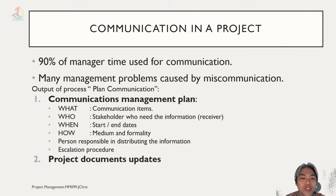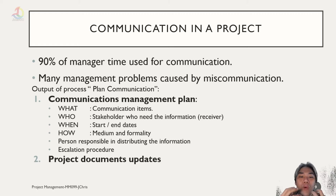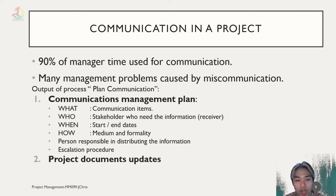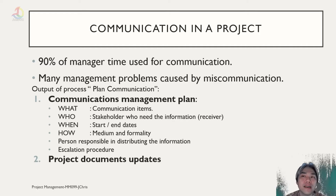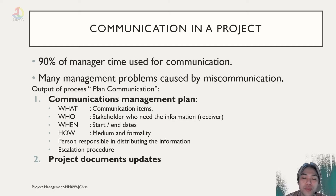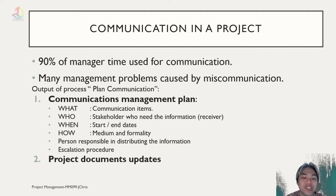In the communication management plan we have to know: what, who, when, and how. 'What' is the communicated items — the things that need to be communicated. 'Who' is the stakeholder that needs the information or gives the information. 'When' is when the information will be needed or taken. 'How' is how the communication is done — what medium, what formality, and who is the person responsible for distributing the information.